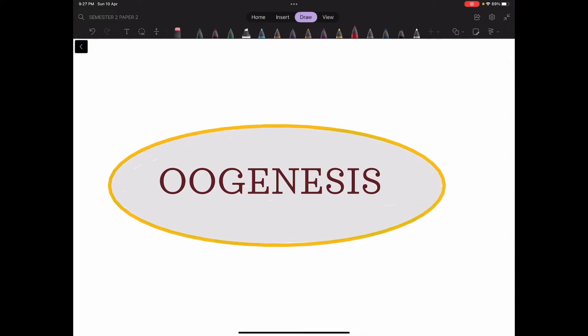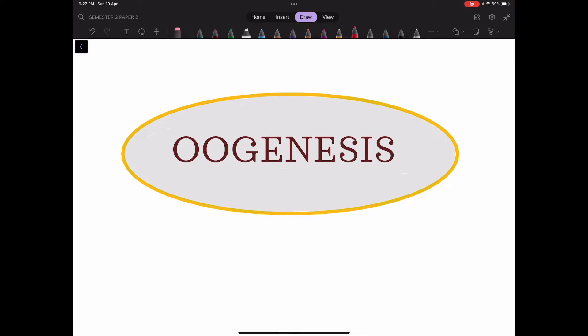Good evening everyone. Today we will discuss oogenesis. Oogenesis is a process of formation of a haploid gamete from a diploid germ cell. Here the germ cell is known as oogonia and the haploid gamete is known as ovum. So we can say that oogenesis is a process of formation of a haploid ovum from a diploid oogonia by undergoing various processes.